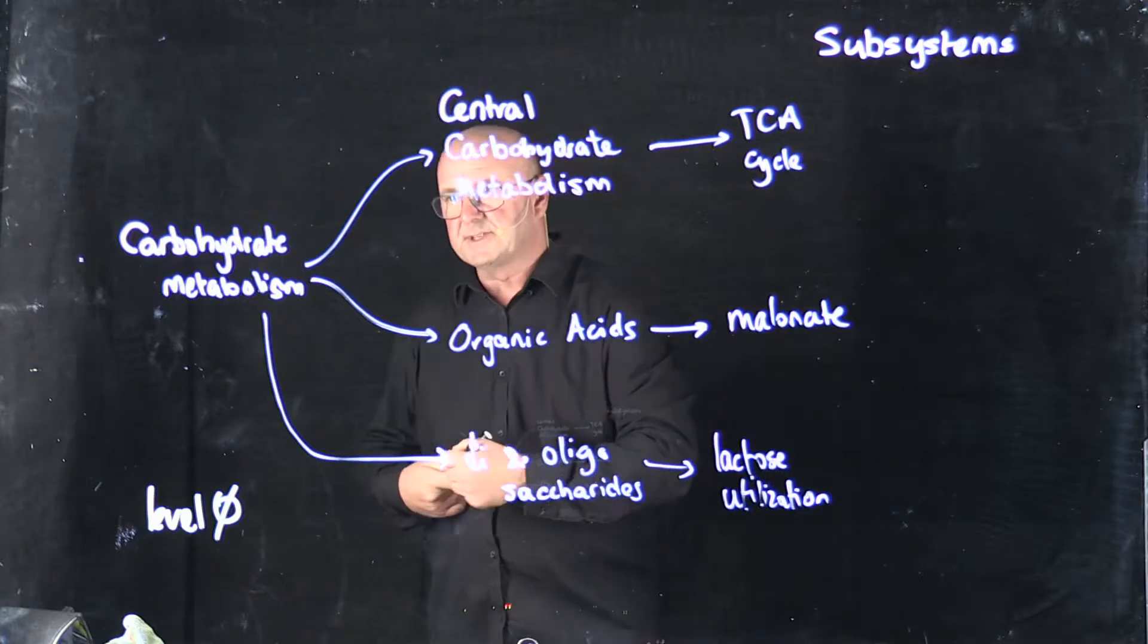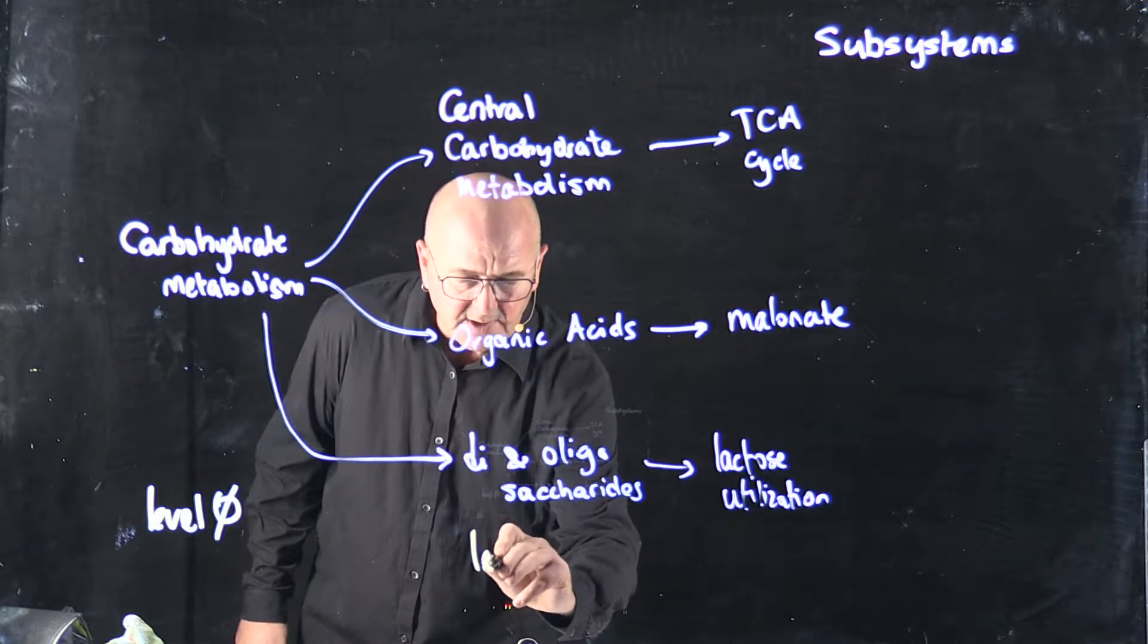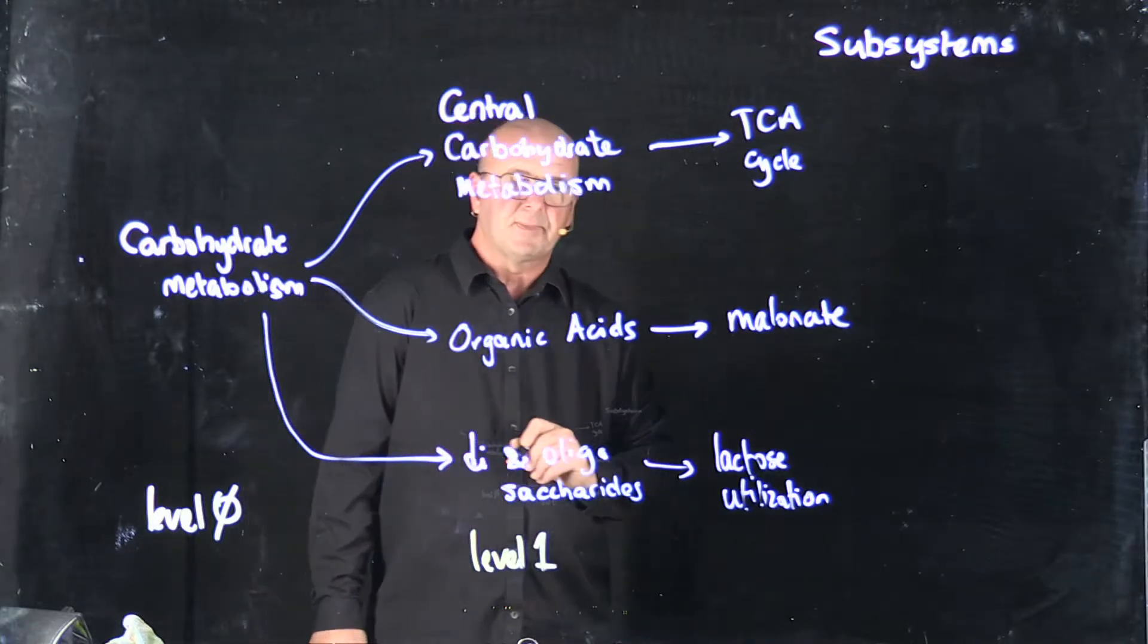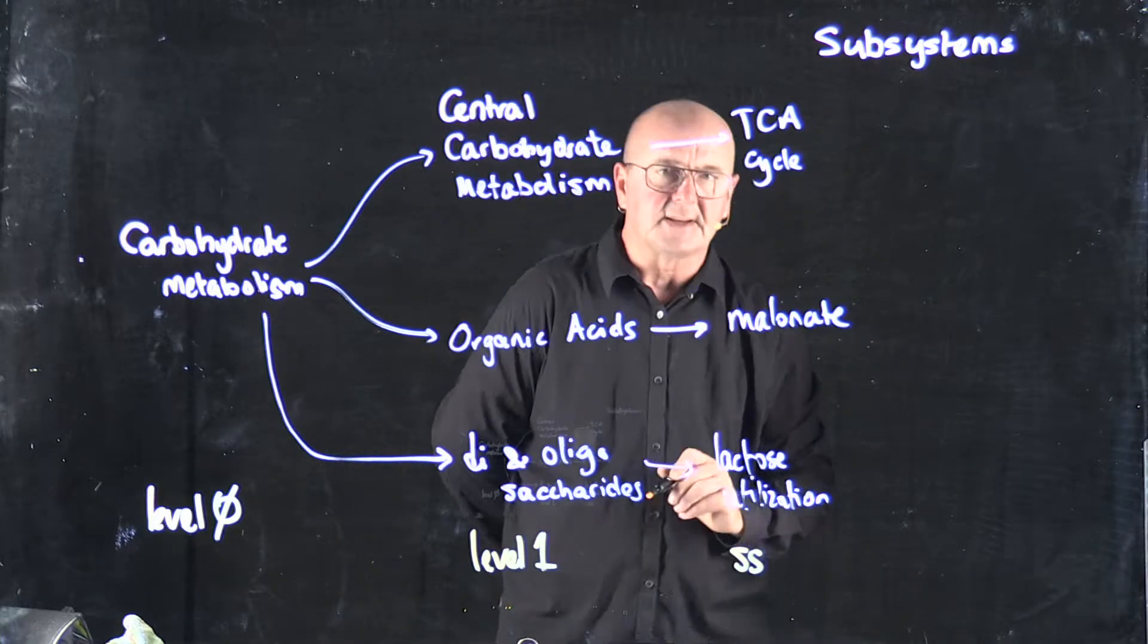So we have our level zero hierarchy, we have our level one classification, and then we have our subsystem itself.